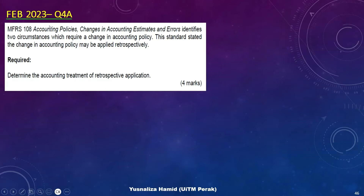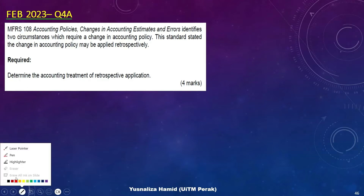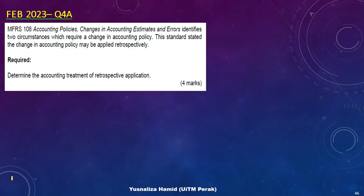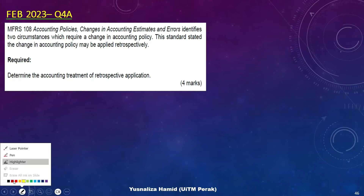Question 4a, MFRS 108, Accounting Policies, Changes in Accounting Estimates and Errors identifies two circumstances which require changes in accounting policy. The standard states that a change in accounting policy may be applied retrospectively. You are asked to determine the accounting treatment of retrospective application.